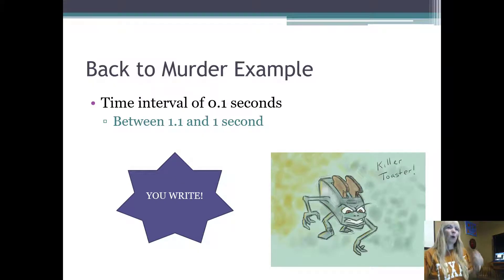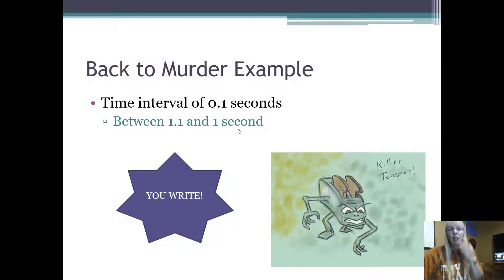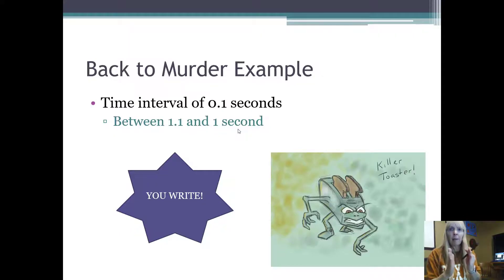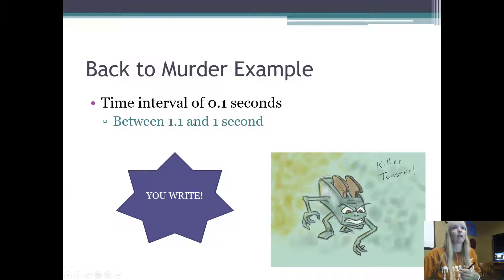So what we're interested in is we developed this formula where we could find at any time — maybe I'm interested in one second. So what I do is I have a small gap, that's that H value, my error. I said let that error be 0.1 seconds. So I want to know what the time interval between one to 1.1 seconds — how fast that toaster's flying.